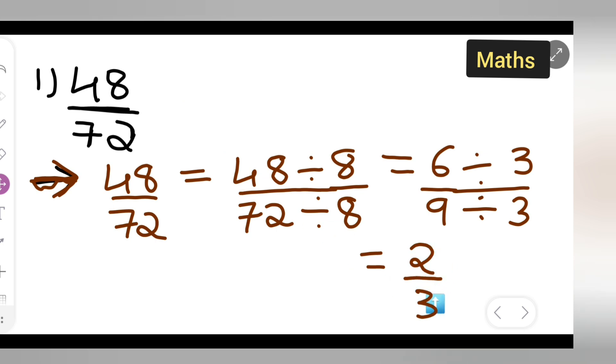Now, these are the prime numbers. We won't be able to find it in any of the numbers. Like, in the table of 4, 5, we won't be getting, right? So, we have to stop it here only and this is the simplest form of the given fraction.